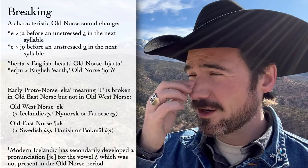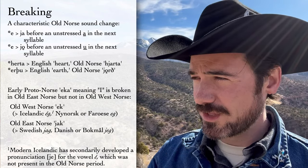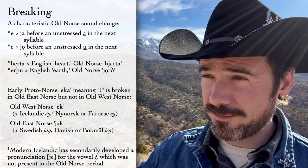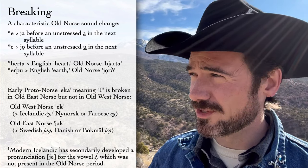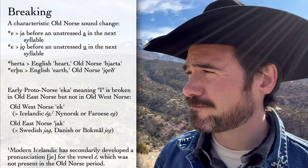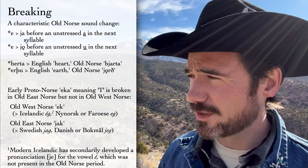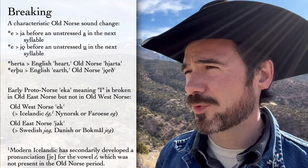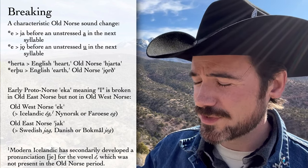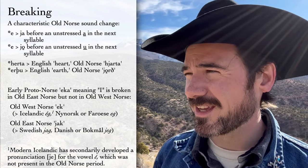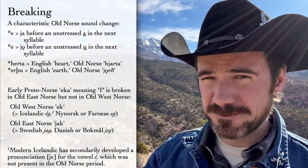In eastern Norway you also see forms of the I-pronoun that come from that Old East Norse form — "jeg" from the eastern part — whereas western and northern Norwegian dialects tend to get "eg" or similar forms without the ja-.